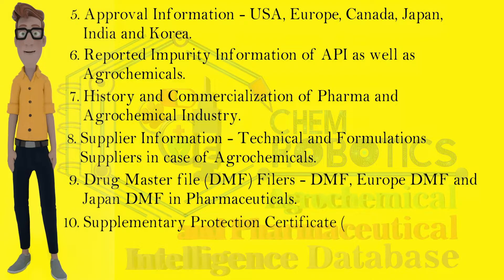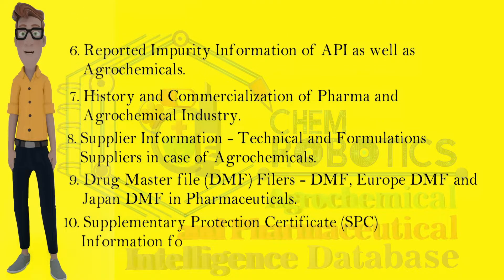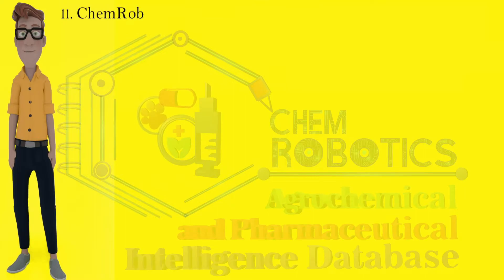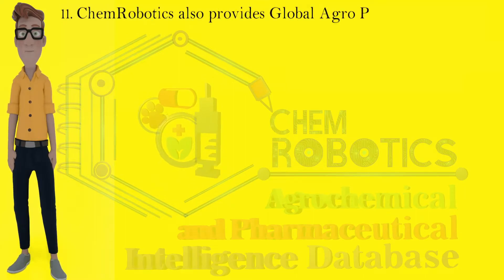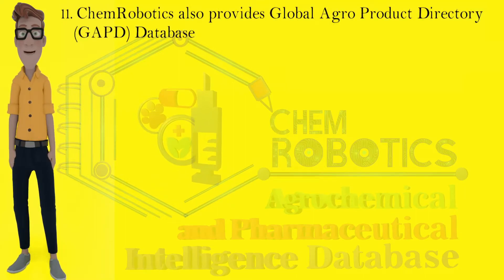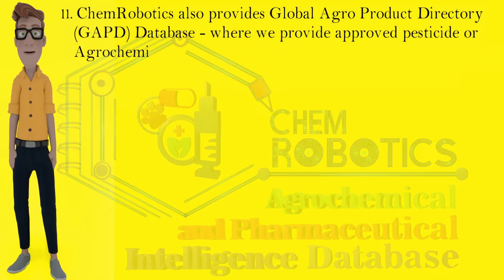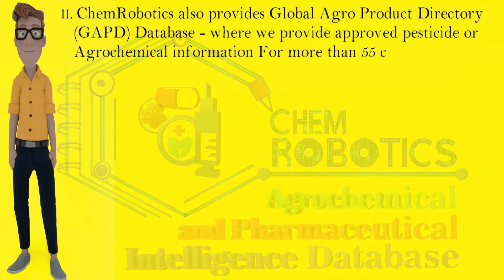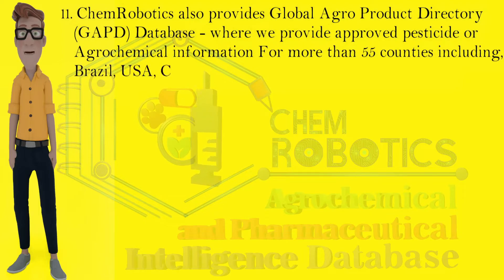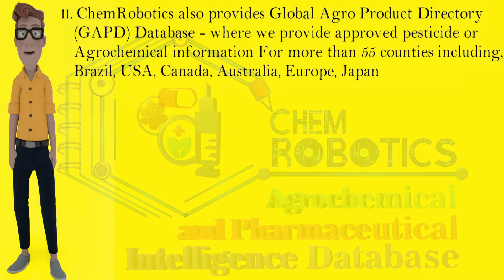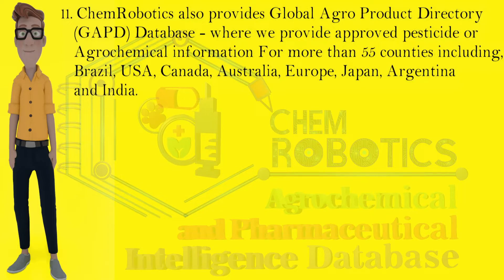Tenth, supplementary protection certificate information for Europe. Eleventh, Chem Robotics also provides the Global Agro Product Directory (GAPD) database, where we provide approved pesticide or agrochemical information for more than 55 countries, including Brazil, USA, Canada, Australia, Europe, Japan, Argentina, and India.